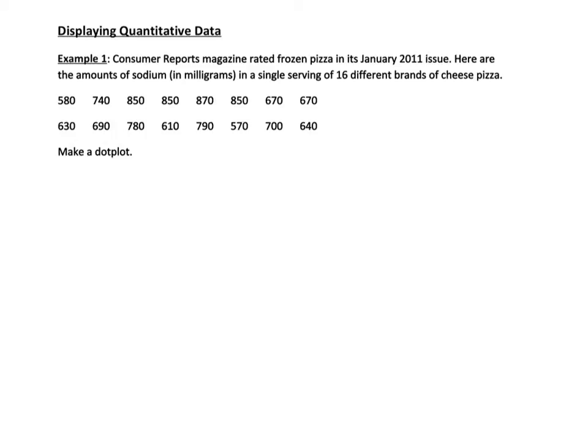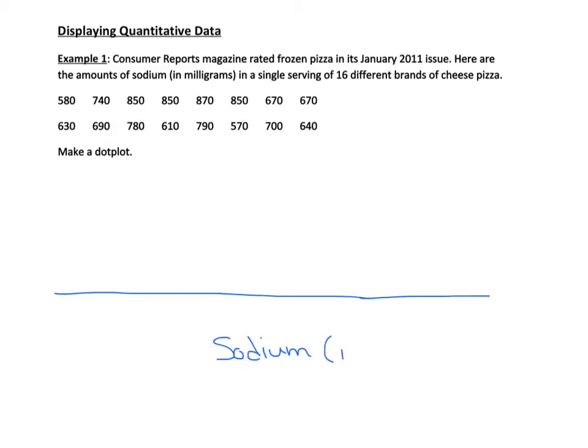So first of all, the dot plot. You are going to look at the numbers that you have. Here I have the amounts of sodium of 16 different brands of pizza, and we're going to start by doing our horizontal axis, which I'm going to label as sodium. What you need to do first is figure out what your scale is going to be. When you're working with quantitative data, it doesn't really matter if you start from zero or not. In this case, starting from zero would make a kind of weird and difficult to draw dot plot.